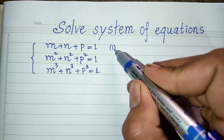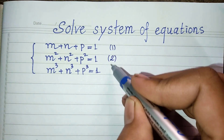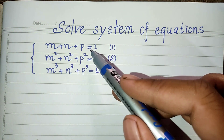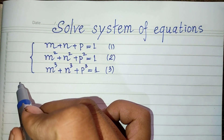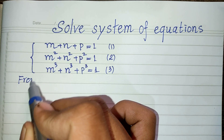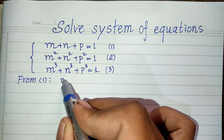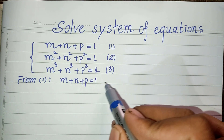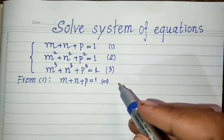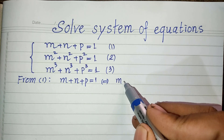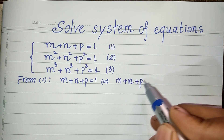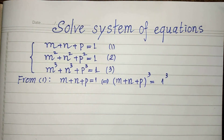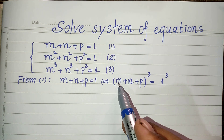Now we go to the solution together. I'll label these as the first equation, second equation, and third equation. From the first equation, we have m plus n plus p equal 1, and I will raise both sides of this equation to the power of 3, so we get m plus n plus p all to the power 3 equals 1 to the power 3.